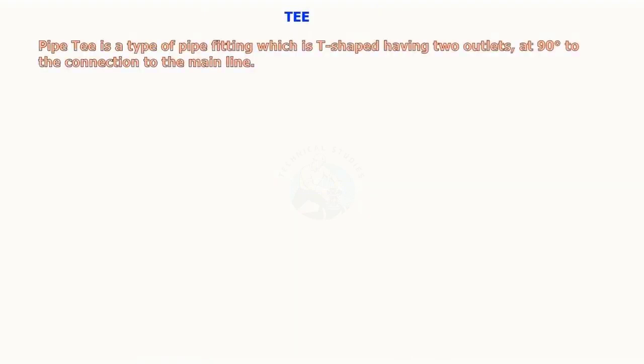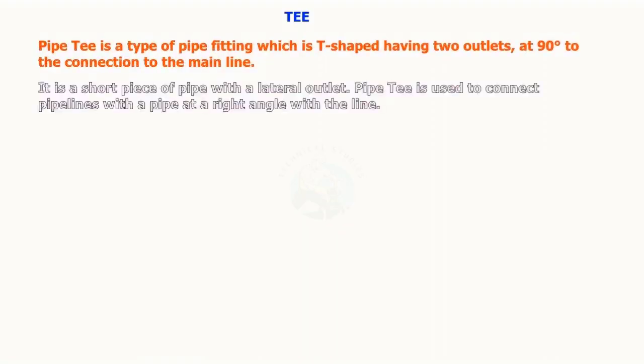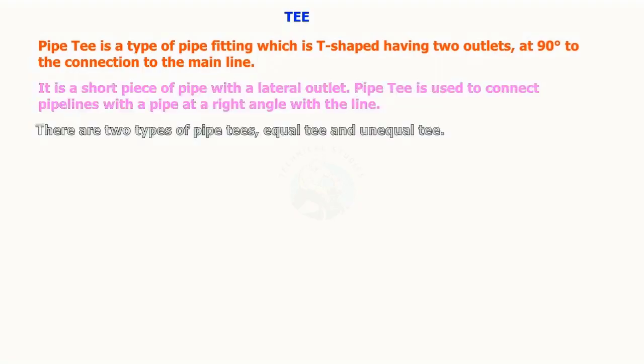Pipe T is a type of pipe fitting which is T-shaped, having two outlets at 90 degrees to the connection to the main line. It is a short piece of pipe with a lateral outlet. Pipe T is used to connect pipelines with a pipe at a right angle with a line. There are two types of pipe T's: equal T and unequal T.